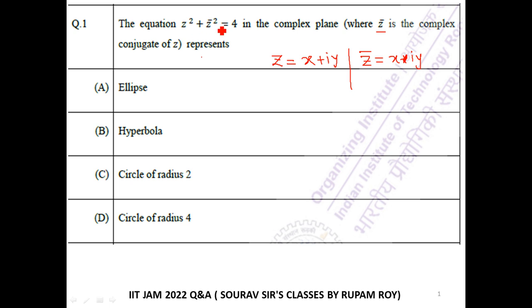So z squared plus z bar squared equals 4. So x plus iy squared plus x minus iy squared, that will be equal to 4.